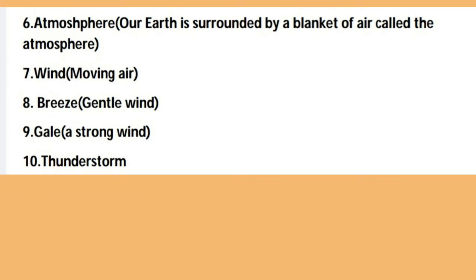The next hard word is 'atmosphere', spelled A-T-M-O-S-P-H-E-R-E. Atmosphere means our Earth is surrounded by a blanket of air. The blanket of air around the Earth is called the atmosphere.